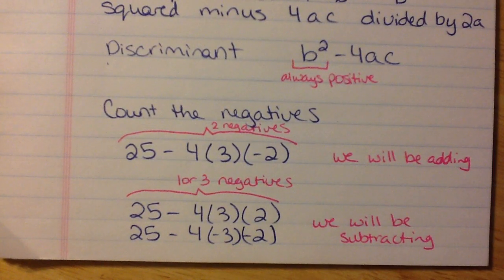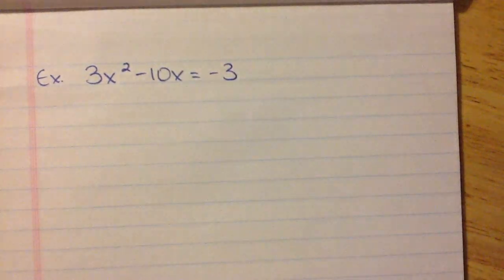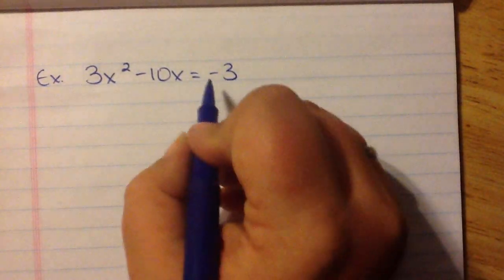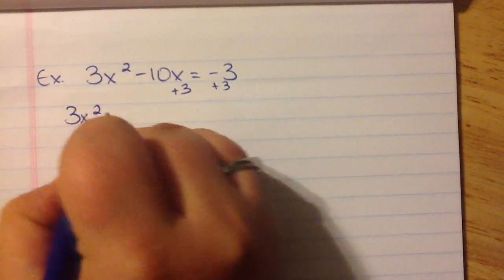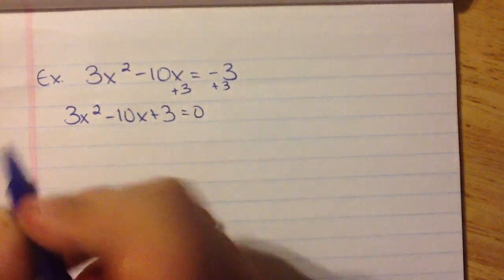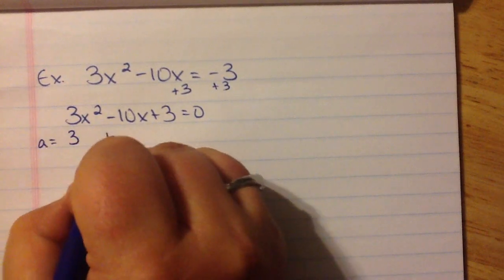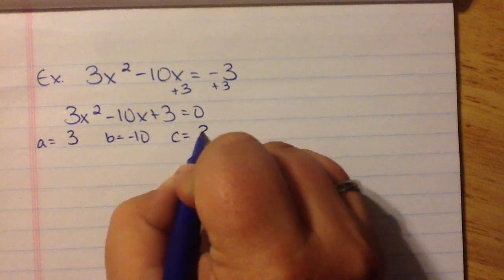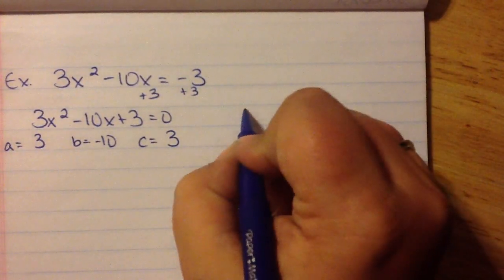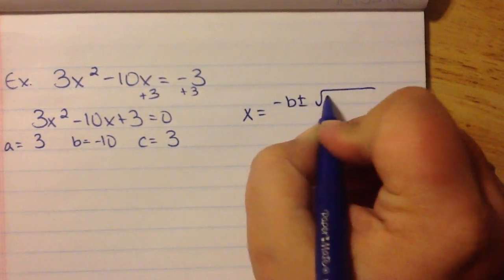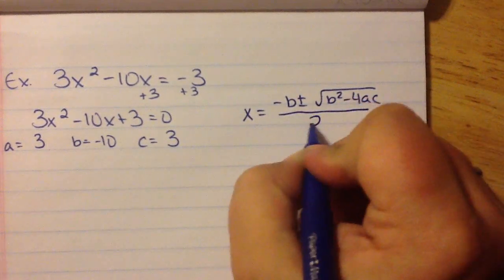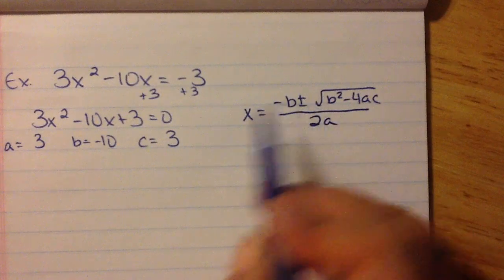Let's get into actually trying some problems. Our first example is 3x squared minus 10x equals negative 3. We need to set it equal to zero, so we move the 3 over: 3x squared minus 10x plus 3 equals zero. Now we look at what a, b, and c are: a is 3, b is negative 10 because it comes in front of the x, and c is 3. Then we write the quadratic formula and replace a, b, and c with those numbers. X is the only letter that gets to stay.